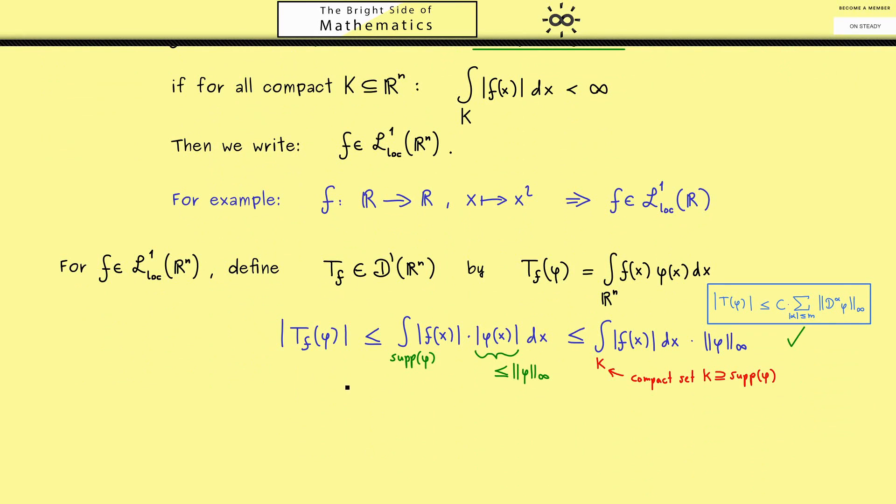And therefore, these distributions are just called regular distributions. To put this into a definition, you would say a distribution T is called regular if there is a locally integrable function f such that T is the same as T_f. So the linear map T can actually be written as an integral in this sense. So you could say these are the distributions that behave like normal functions as we already know it. But we also know there are much more distributions than that.